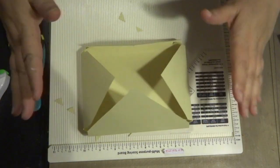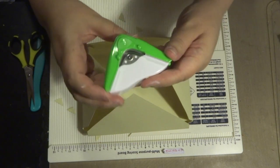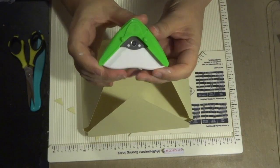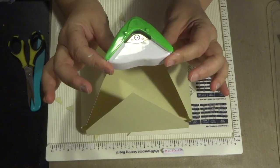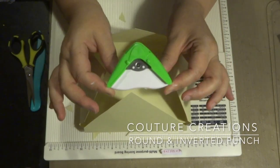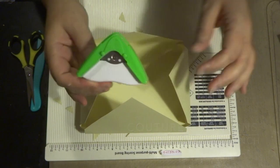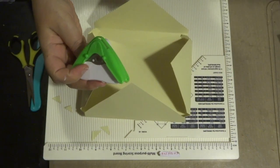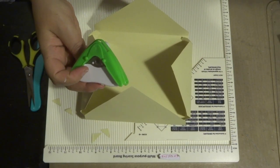But before we put that all together I'm going to be using this which is the Couture Creations rounded and inverted punch corner punch. It does two types of corners. One corner is, and I'll show you on a piece of cardstock.